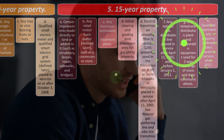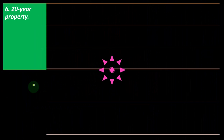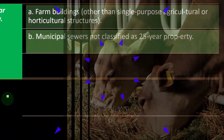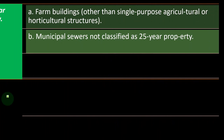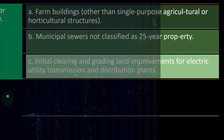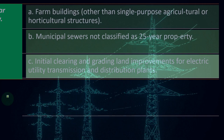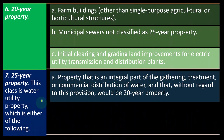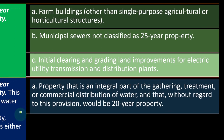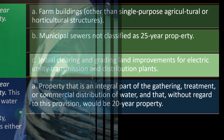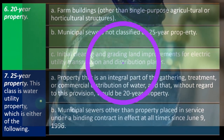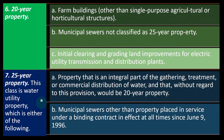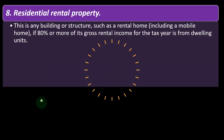Twenty-year property includes farm buildings other than single-purpose agricultural or horticultural structures, municipal sewers not classified as 25-year property, and initial clearing and grading land improvements for electric utility transmission and distribution plants. Twenty-five-year property is water utility property — either property that is an integral part of the gathering, treatment, or commercial distribution of water, or municipal sewers other than property placed in service under a binding contract in effect since June 9, 1996. This is a highly specialized category.